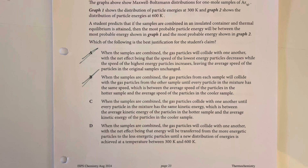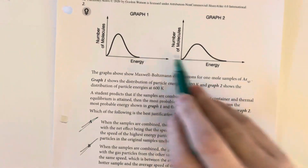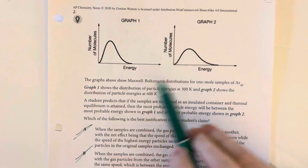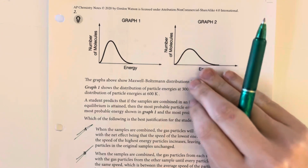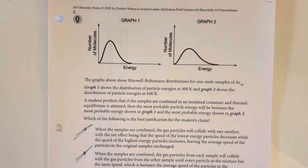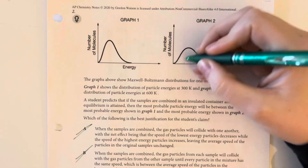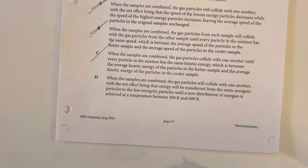Option C says when the samples are combined, the gas particles collide with one another until every particle in the mixture has the same kinetic energy. This is immediately disregarded — we have a wide range of energies and an overall average energy, but not everybody has the exact same energy. We don't just have a spike with no curve at all. So option C is also eliminated, leaving me with D.